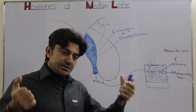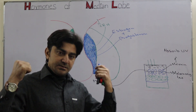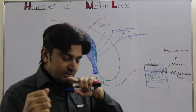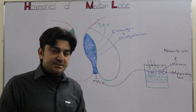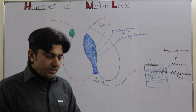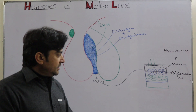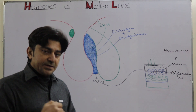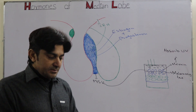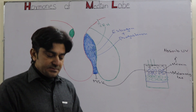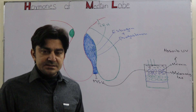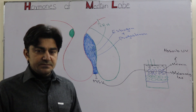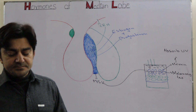In the Arctic region, birds remain white and are completely camouflaged with the snow, making them difficult to detect. In the next lecture, I will talk about the hormones of the thyroid gland.